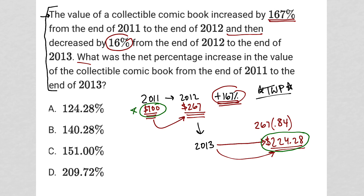Choosing $100 as the starting number was very valuable here, because finding the percent increase from $100 to $224.28 is simple — it's 124.28%, since that is the difference between $224.28 and $100. So there's a 124.28% net increase from 2011 to 2013. That's the answer.